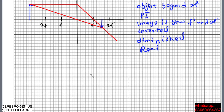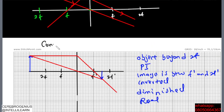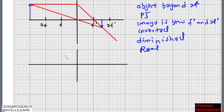Let's try another location — we bring the object closer to the lens. This is a converging lens because the rays converge toward the axis after refraction. We again mark f, 2f, f prime, and 2f prime on the diagram.